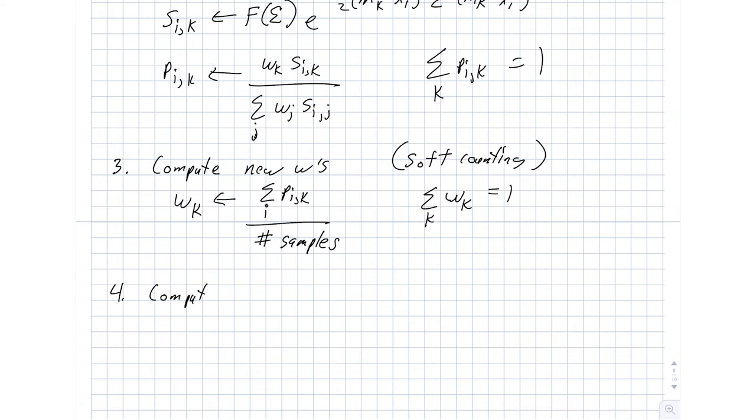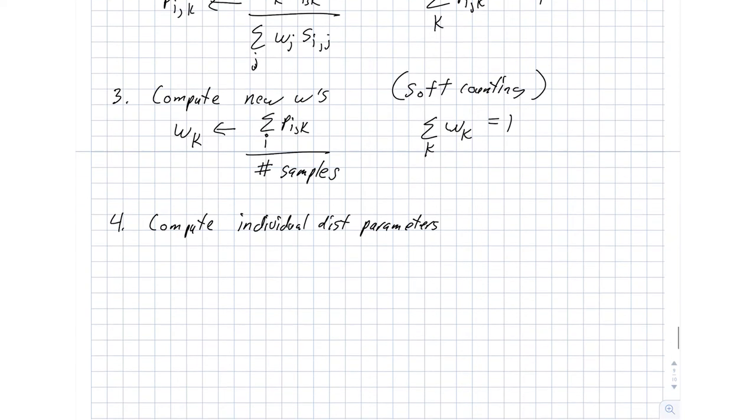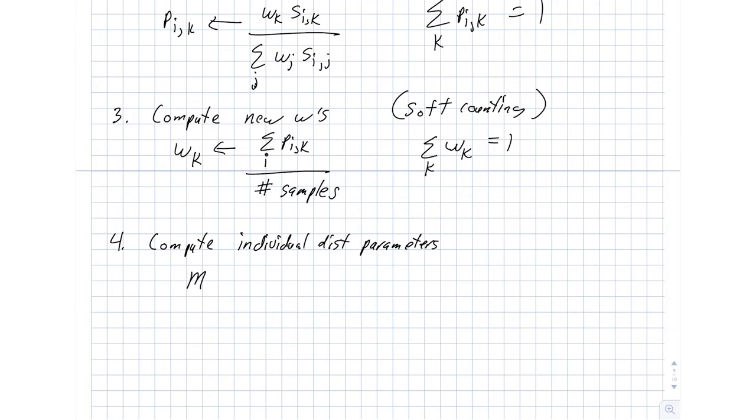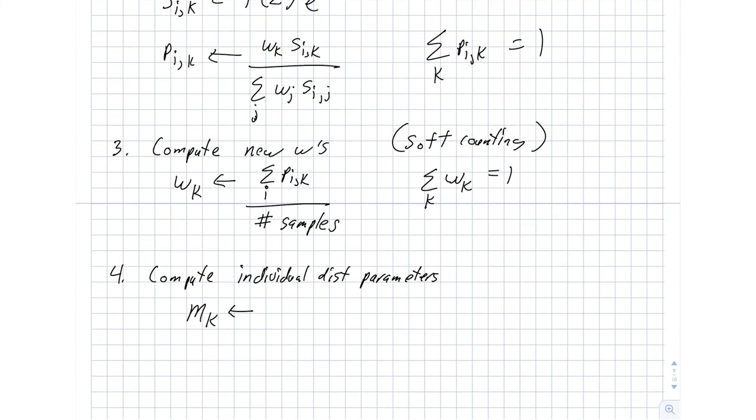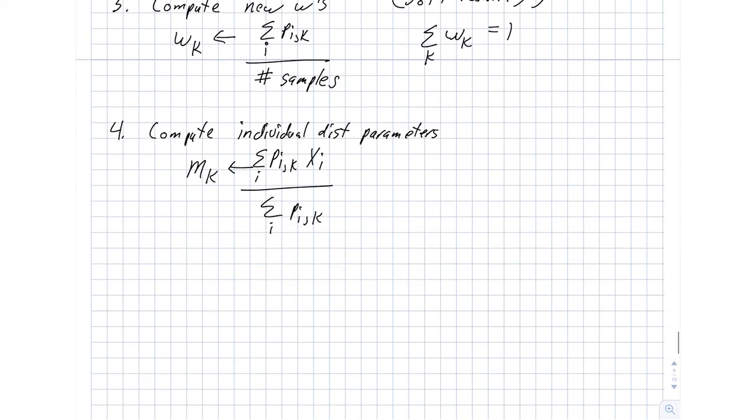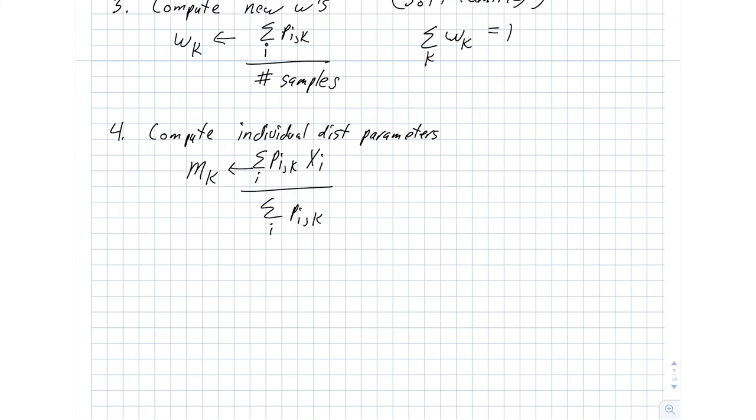And the next step is to compute our distribution parameters, in particular, the individual distribution parameters. And for the mean location, this looks just like the soft boundary k-means clustering. Sum over all samples, and we'll divide by p_ik.